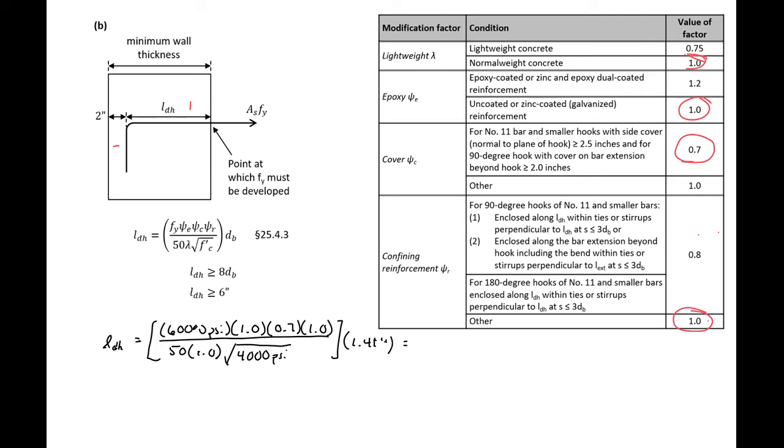So we'll get our LDH then to be equal to 18.7 inches. We can check this off of our minimums. So 8 times diameter of a bar, 8 times 1.41 is 11.3, so we're okay here.